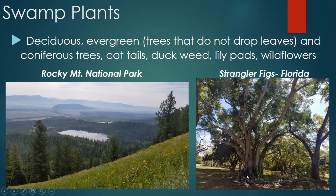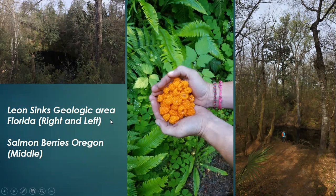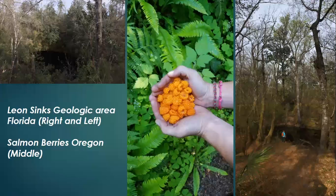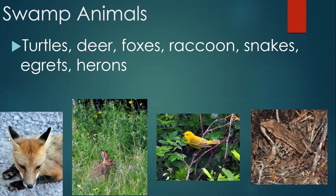Here is a strangler fig in a Florida swamp — you can see how it uses large roots to stabilize itself. There's no water in this photograph, but this entire area floods several times a year, so this tree which has been there for several hundred years needs to stabilize itself during wet periods. At Leon Sinks National Geologic Area you can see the understory: ferns, oxalis, and what I'm holding here are called salmon berries. In the Pacific Northwest they have salmon berries instead of raspberries and blackberries.